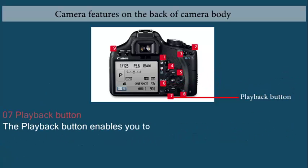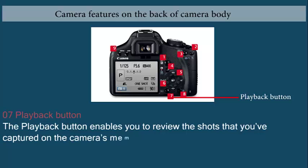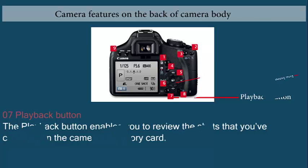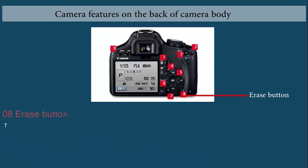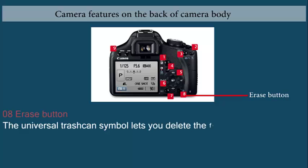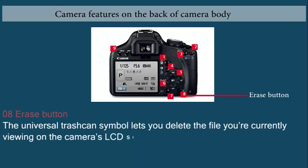Playback button: The playback button enables you to review the shots that you have captured on the camera's memory card. Erase button: The universal trash can symbol lets you delete the file you are currently viewing on the camera's LCD screen.